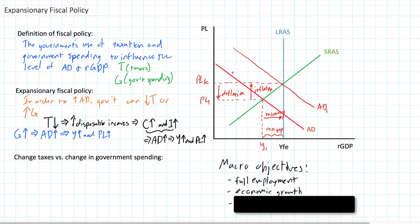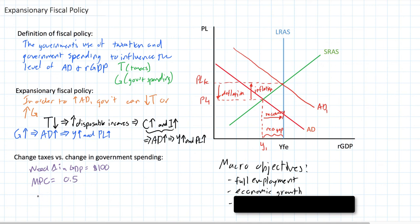Now, if you watched the last video in this unit, you saw that there's actually a multiplier effect that takes place in either of these scenarios — a tax cut or an increase in government spending. Let's talk about how a change in taxes affects aggregate demand relative to a change in government spending. To illustrate this, let's assume that the needed change in GDP is $100. Let's also assume that the MPC — the marginal propensity to consume — is 0.5. This gives us a multiplier of 1 over 1 minus 0.5, which is 1 over 0.5, which equals 2. This country has a spending multiplier K of 2.